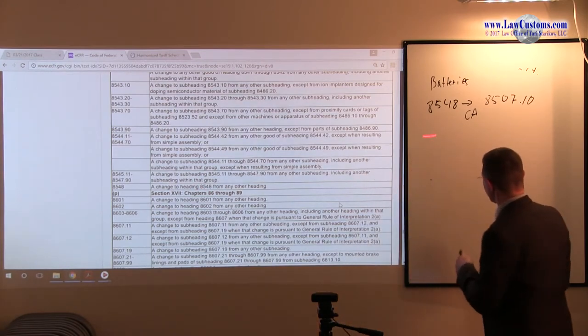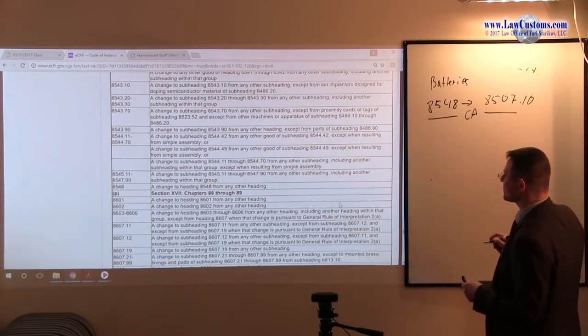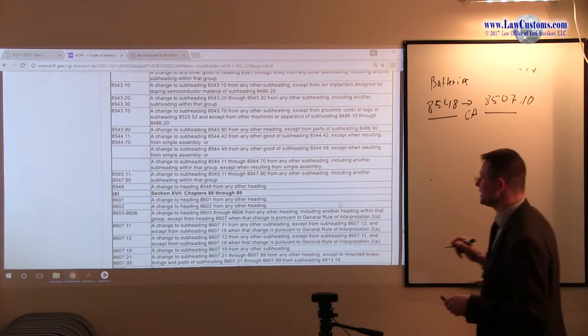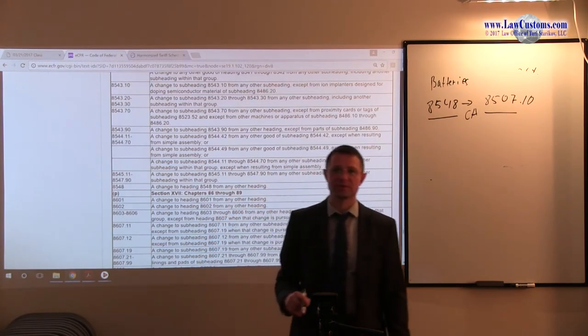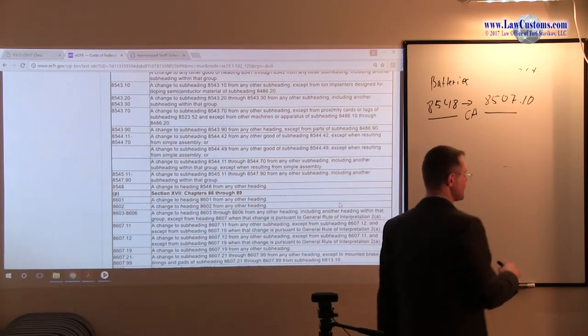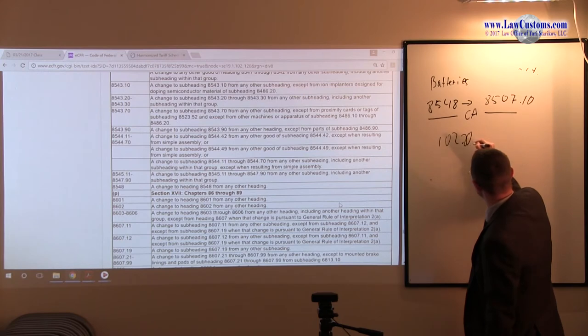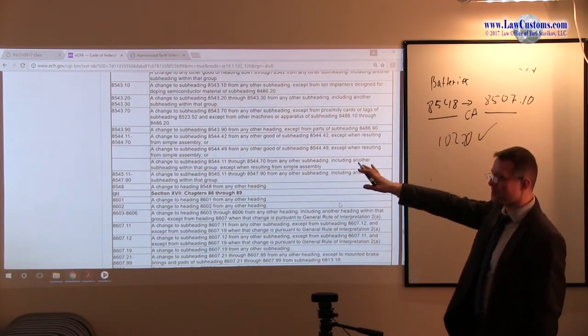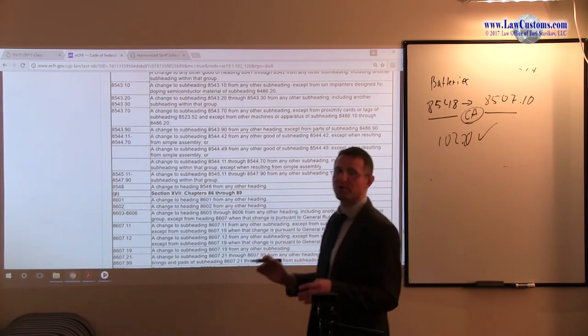And it says a change to heading 8548 from any other heading. So heading is first four digits. A change took place from this heading to this heading. So under this tariff shift methodology, this means that the 102.20 tariff shift has been met. This means that under the marking rules, Canada is a country of origin. So the spent batteries qualify for NAFTA. But wait.